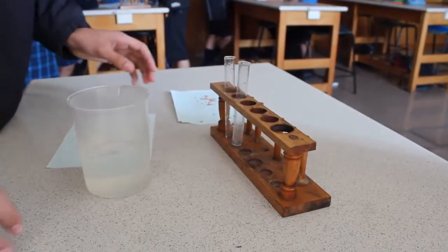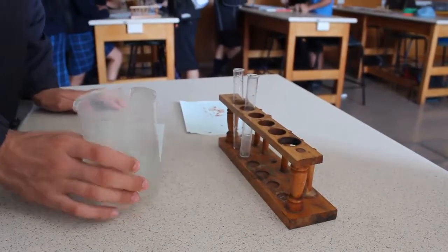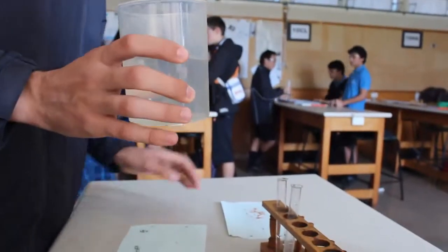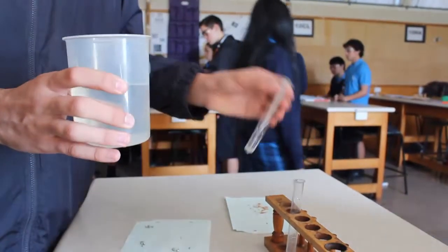Okay, we're now doing an experiment on catalysts. We've got some dilute sulfuric acid and we're going to put about two centimeters in each test tube.